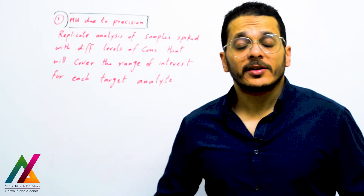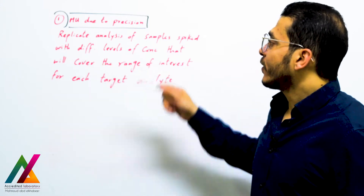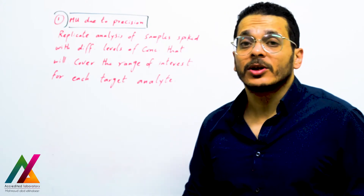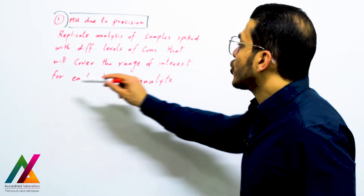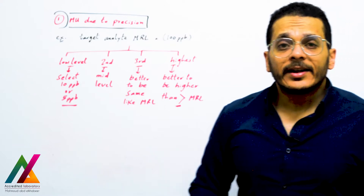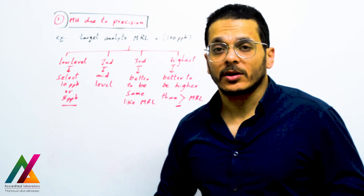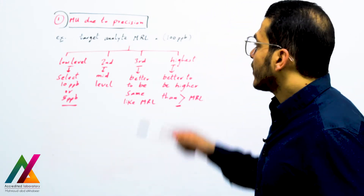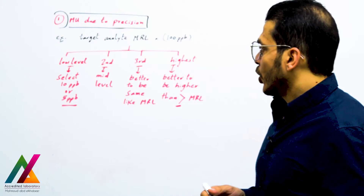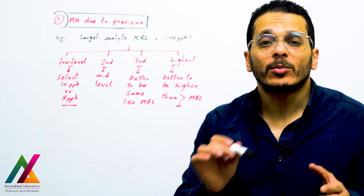Measurement uncertainty due to precision comes from repeatability and reproducibility. You will make replicate analyses of samples spiked with different levels of concentration that cover the range of interest — the range of concentrations expected to be measured by the method for each target analyte. The concentration levels are selected based on the maximum residual limit or specification limit of the target analyte.